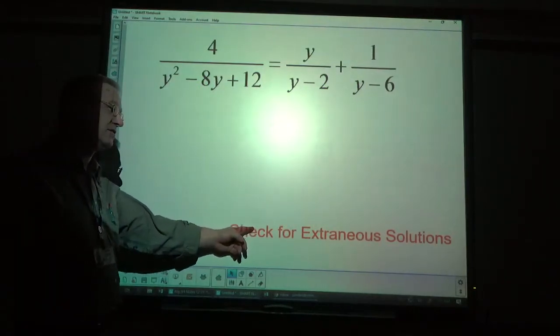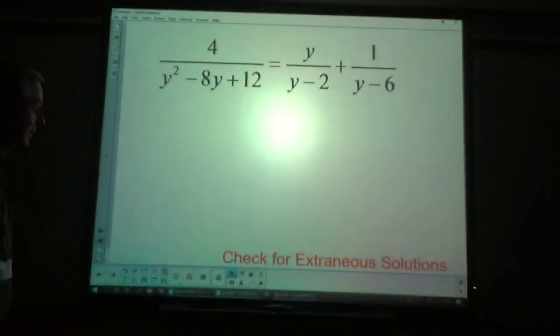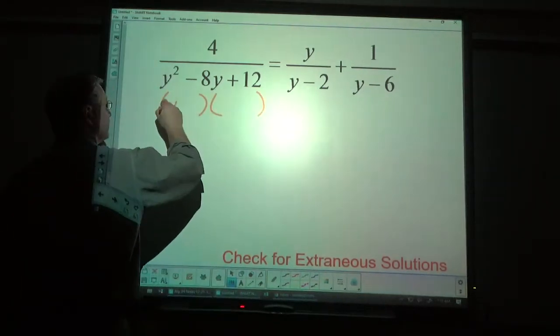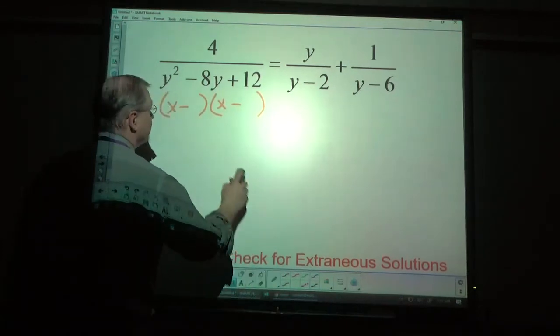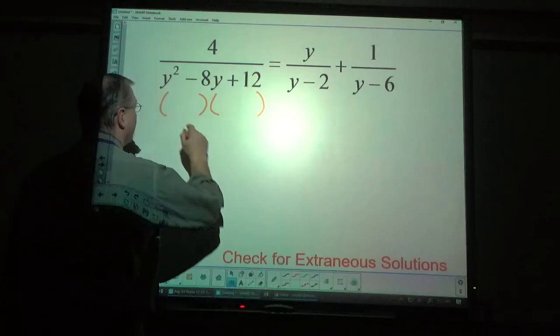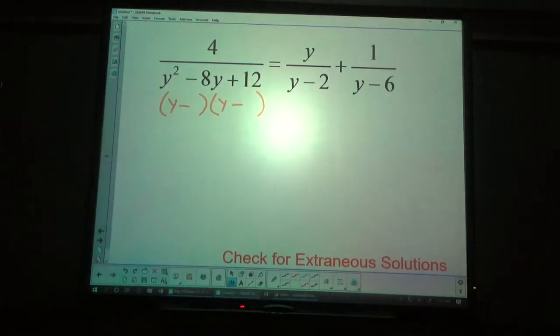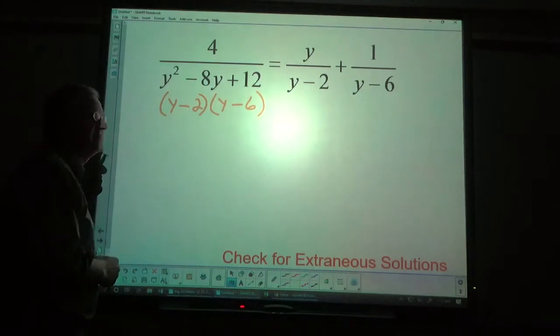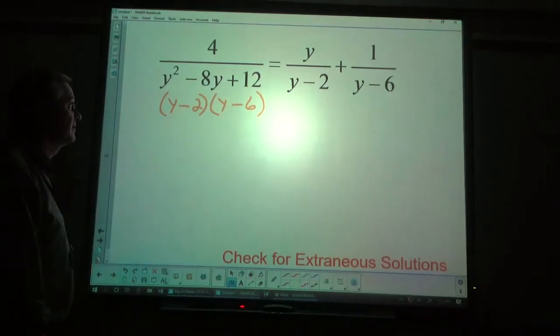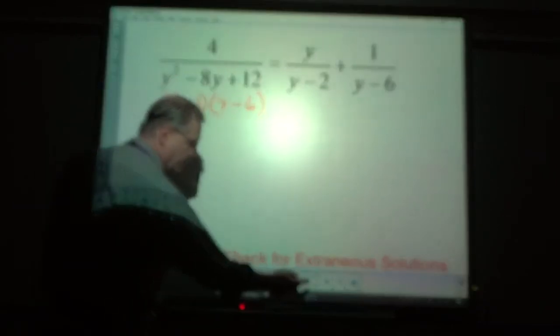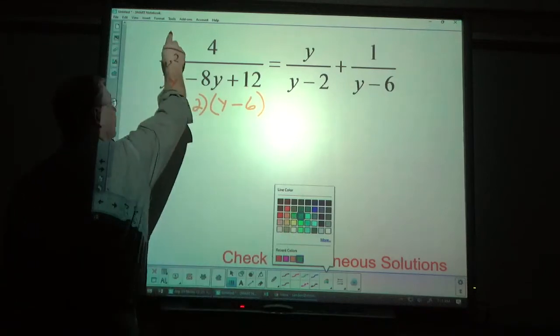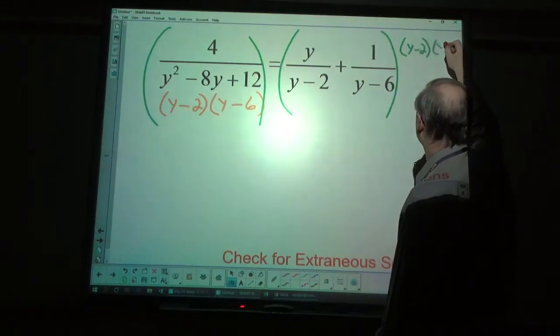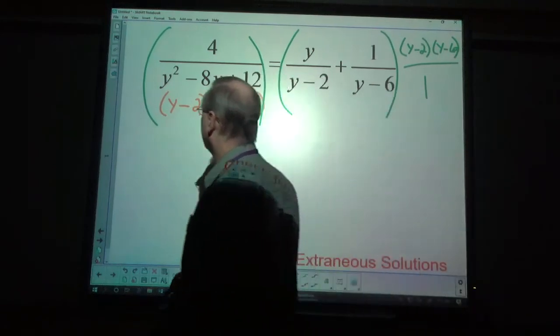This one is a check for extraneous solutions. I'm going to start us off by factoring this into two parentheses. It's a y. Y minus y minus. It's probably 2 and 6. 2 times 6 is 12. And, 2 plus 6 is 8. And, they're negative. So, it makes negative 8. It does give that to me. So, let us go ahead and multiply everything on both sides by y minus 2, y minus 6 over 1.